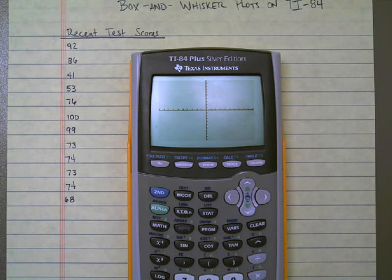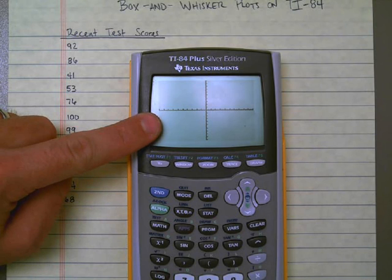Well, the problem is that, remember, the test scores are over near somewhere between 40 and 100. So my window's off. Really, I'm just looking at the wrong part of the graph.